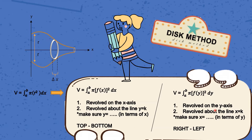For the next two cases — revolving on the y-axis or revolving on the line x equals k — we use pi times f(y) squared dy. We have to make sure that x is in terms of y, and we take the right function minus the left function.